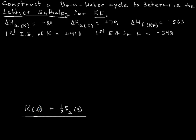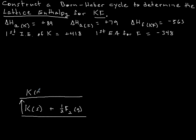Normally when you do a Born-Haber cycle, you begin with the metal — in this case, potassium. The first thing we're going to do is atomize it, which is to turn it into a gaseous atom. We're going to go up on the diagram because we're adding energy to atomize it, turning potassium solid into potassium gas. This is the enthalpy of atomization of potassium, which is given as +89 kilojoules per mole.